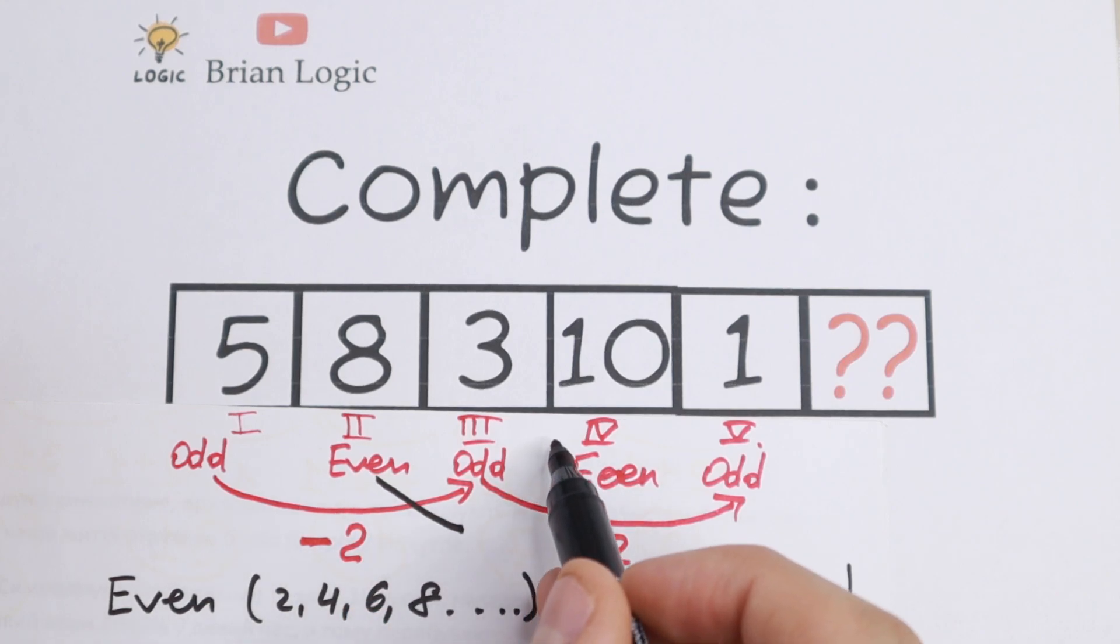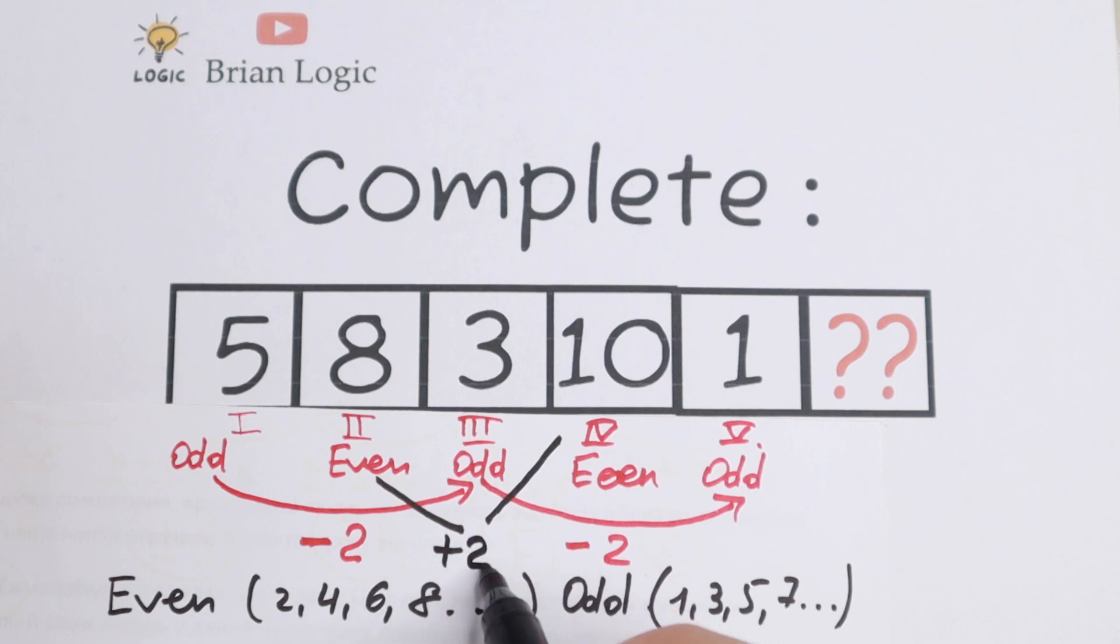add 2 to get 10. So as you can see the pattern between all of these numbers. We subtract 2 from odd numbers and we add 2 to even numbers.